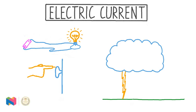In this video, our topic is electric current. Electric current is the flow of electric charge, and here we see three examples of this type of flow: a light bulb lighting up in an electric circuit, our finger getting a small electric shock when it comes near a doorknob, and even a bolt of lightning are all examples of electric charge in motion.